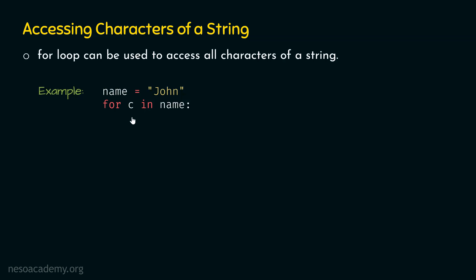Now, inside this for loop, we just want to use the print function to display each character received in variable c. We can type 'print c' for this purpose. But if we want to print each character in the same line, then just typing 'print c' will not help, because each character will take its own line. For this purpose, we need to provide one more argument to the print function, if we want to display all characters in the same line.